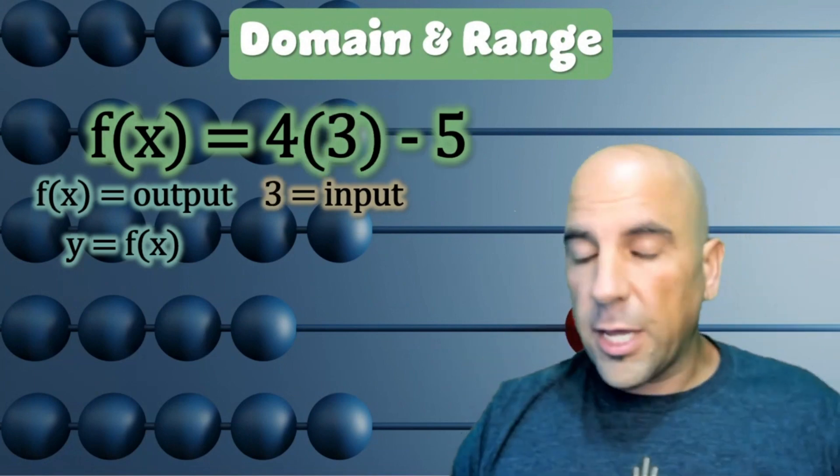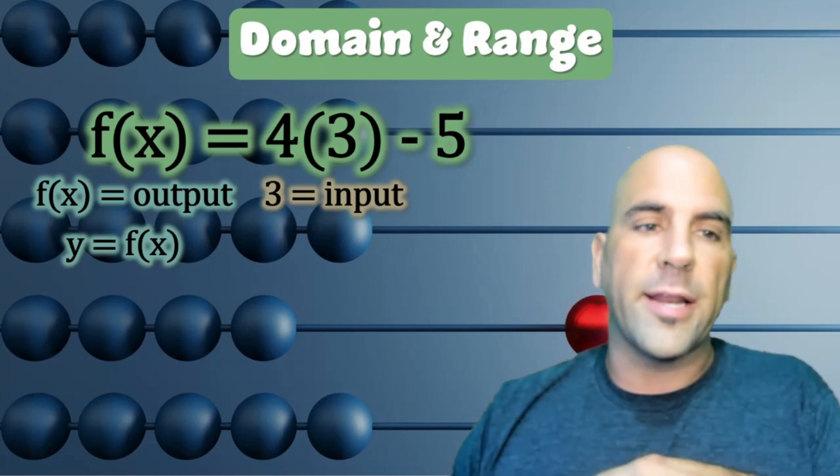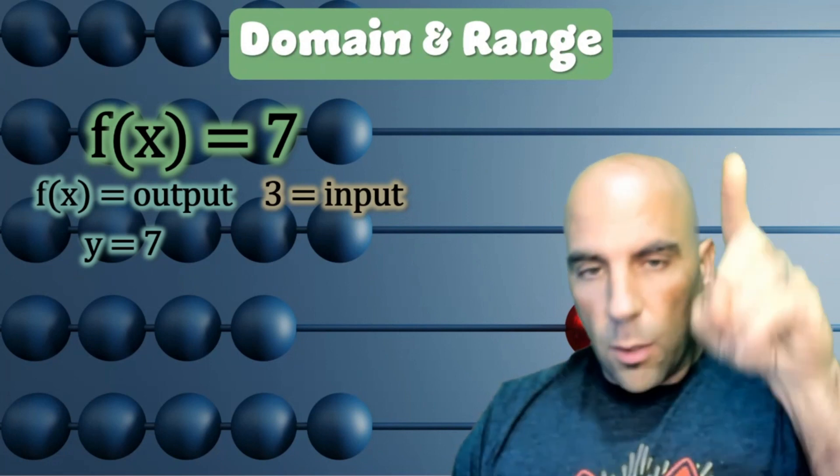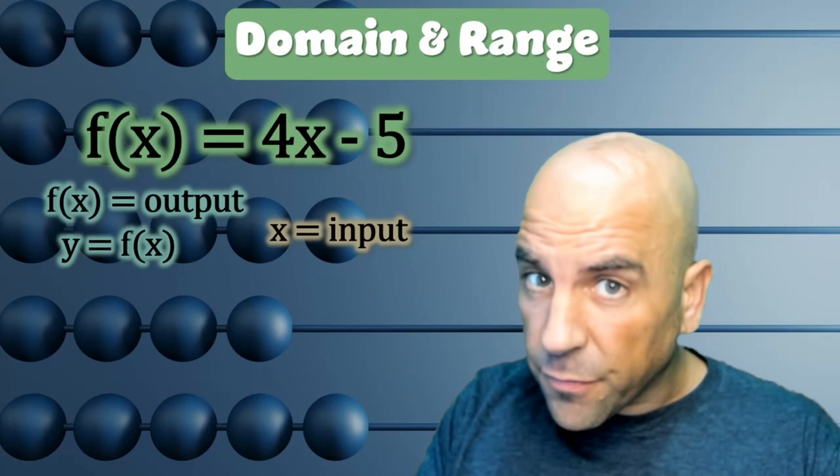So if, for instance, our x was three, we'd plug the three in. Three times four is 12, minus five, we would get our output is seven, our y is seven. And we can make a table out of that. Let's get specifically to the domain and range after that review of functions.